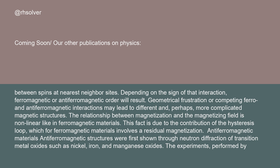Geometrical frustration or competing ferro- and antiferromagnetic interactions may lead to different and perhaps more complicated magnetic structures. The relationship between magnetization and the magnetizing field is nonlinear, like in ferromagnetic materials. This fact is due to the contribution of the hysteresis loop, which for ferromagnetic materials involves a residual magnetization.